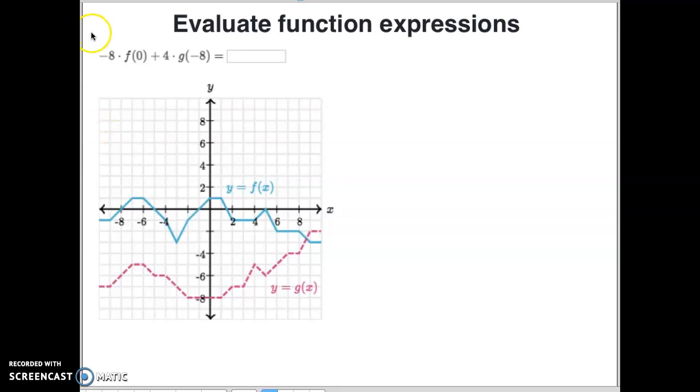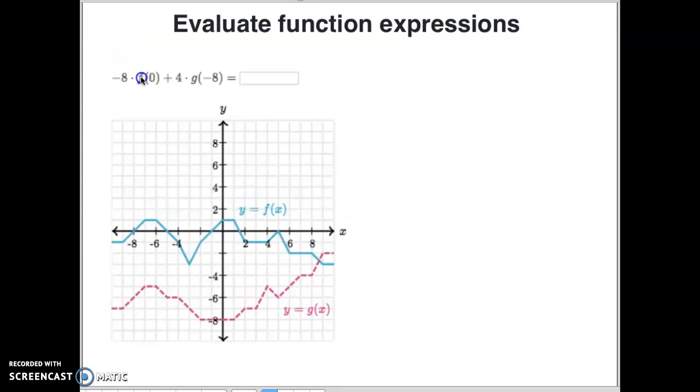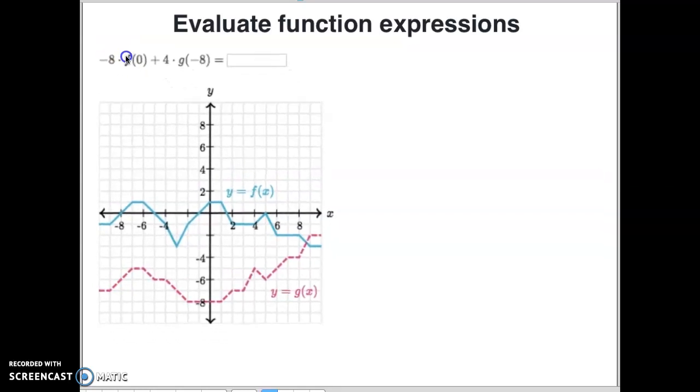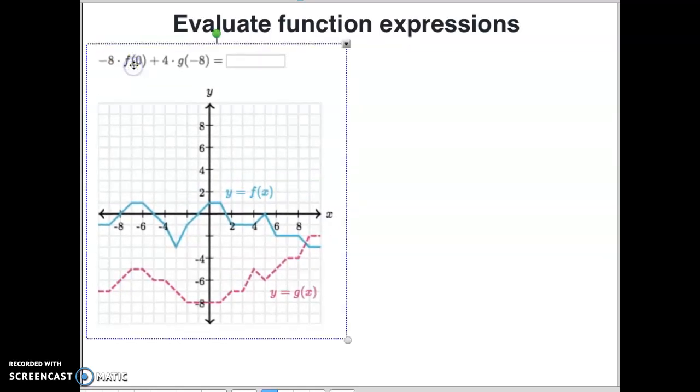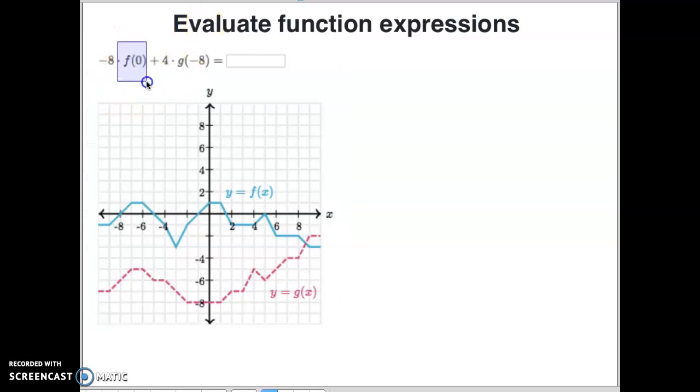So you're going to notice this equation up here looks confusing. I'm going to help you out and highlight this so it's not so confusing. Do you notice on this equation how they have an f of 0 and then they have a g of negative 8?